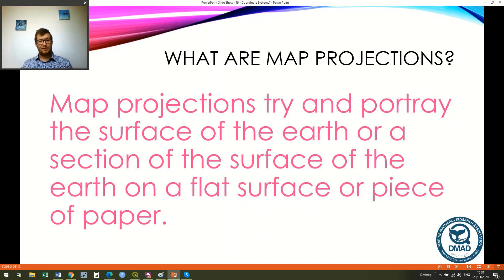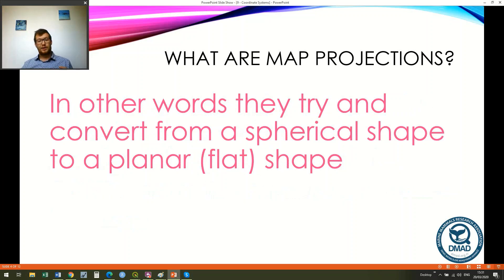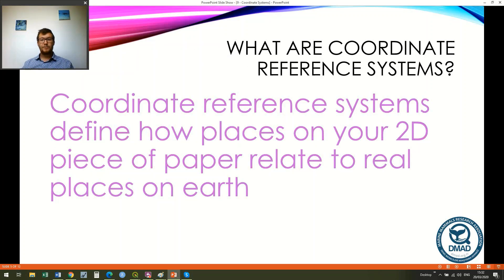So firstly, what are map projections? Very basically, map projections try to portray the surface of the earth — or at least a section of it — on a flat surface or piece of paper. In other words, they try to convert our real 3D, ellipsoidal world to a planar or flat shape. Coordinate reference systems then define how places on that planar surface relate to real places on earth.